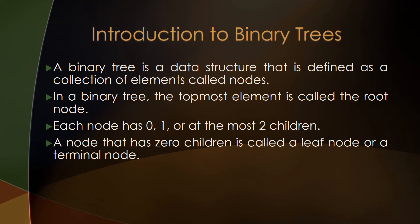A binary tree is a data structure defined as a collection of elements called nodes. In a binary tree, the topmost element is called the root node. Each node has either 0, 1, or at most 2 children. A node that has 0 children is called a leaf node or a terminal node.